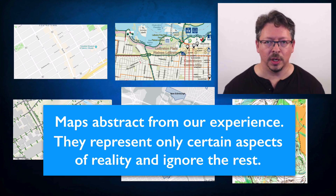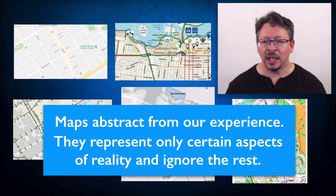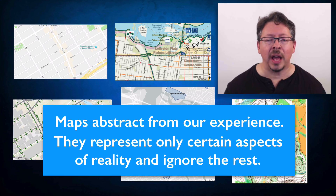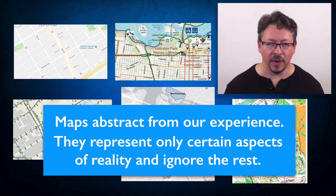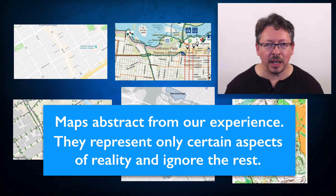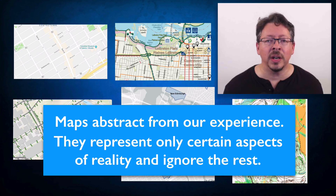So that is the first point I want to make: maps abstract from our experience. What does that mean? It means that they represent only certain aspects of reality and they ignore the rest. They radically simplify reality. Why do we do this? Because we need to simplify reality in order to focus attention on the features that are relevant to our interests.